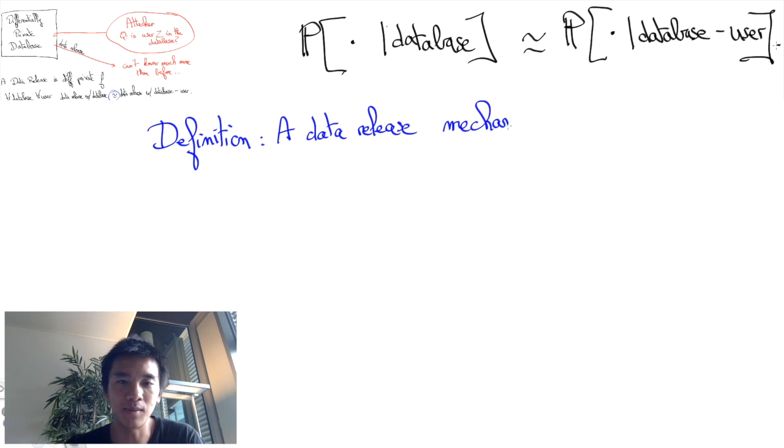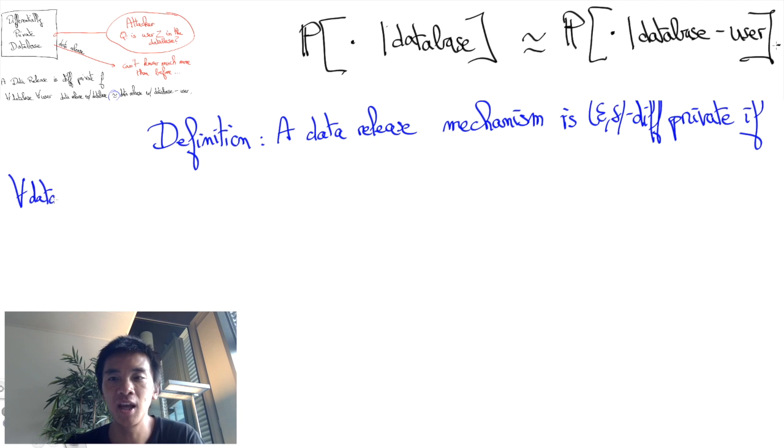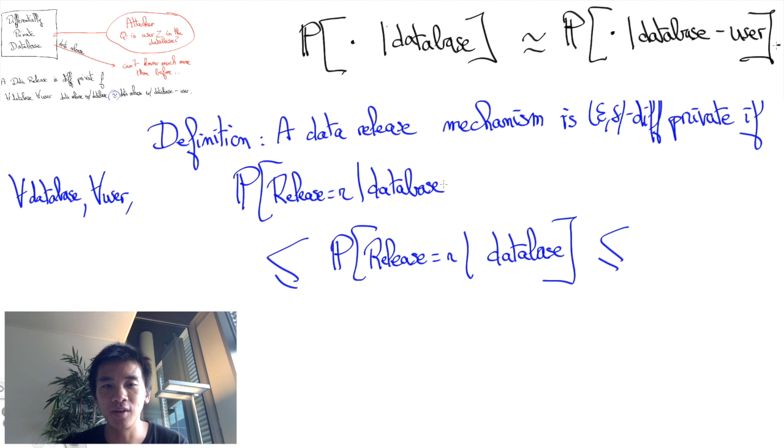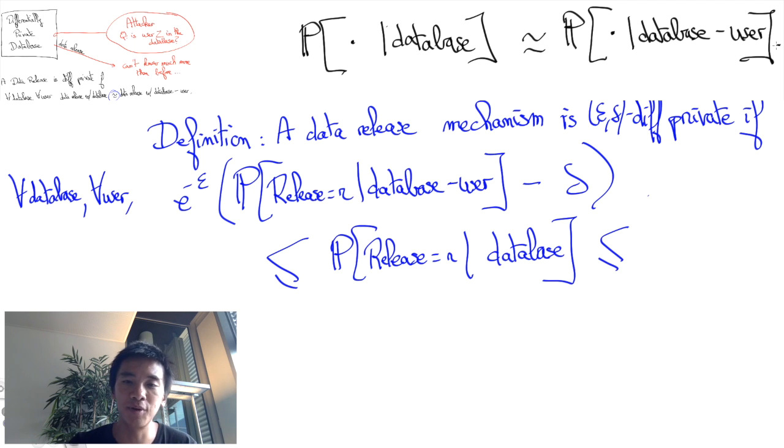Slightly more formally, we say that the database release mechanism is epsilon-delta differentially private if the probability that the released data is equal to r given the database is between e to the minus epsilon, so something close to 1, times the probability that the released data is equal to r given that the user has been removed from the database minus some small quantity delta.